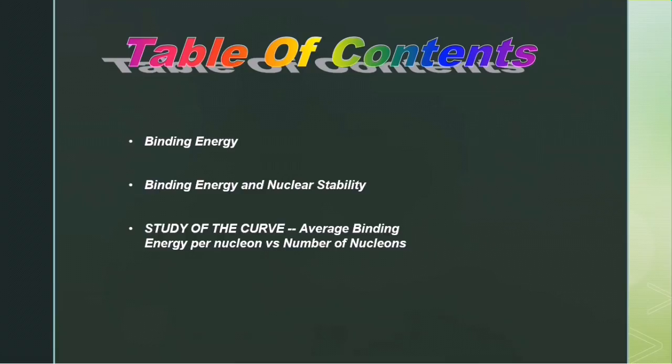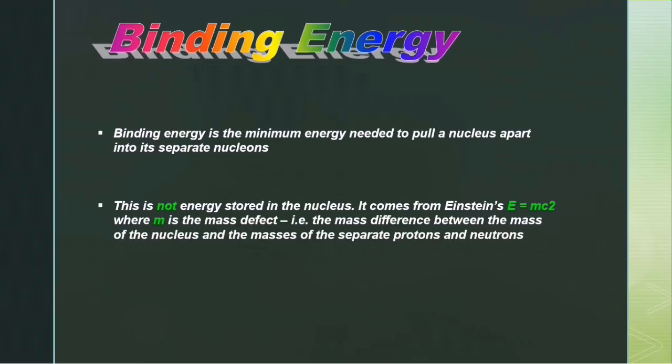Binding energy is the minimum energy needed to pull a nucleus apart into its separate nucleons. This is not energy stored in the nucleus. It comes from Einstein's equation E = mc², where m is the mass defect - that is, the mass difference between the mass of the nucleus and the masses of the separate protons and neutrons.